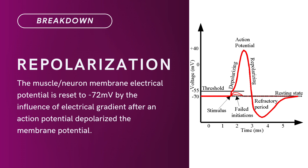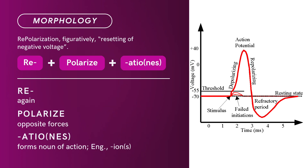Compound Term: Repolarization. Brief Definition: The muscle neuron membrane's electrical potential is reset to negative 72 millivolts by the influence of the electrical gradient, after an action potential depolarized the membrane potential. Term Morphology: compound of re- plus polarize plus -atio. Re- means again. Polarize means opposite forces. -Atio is a suffix that forms nouns of action. There you have it — Compound Term: Repolarization.